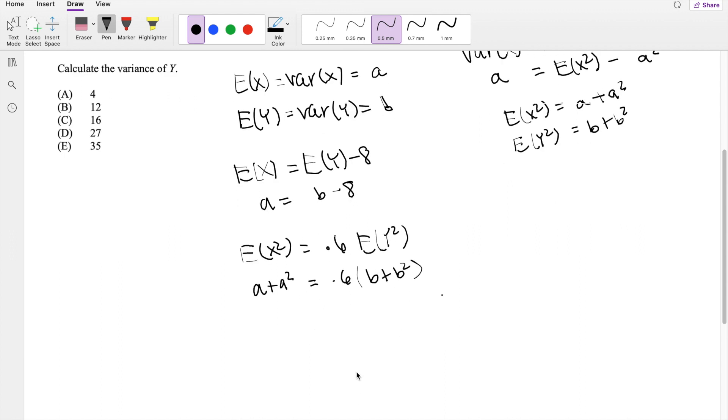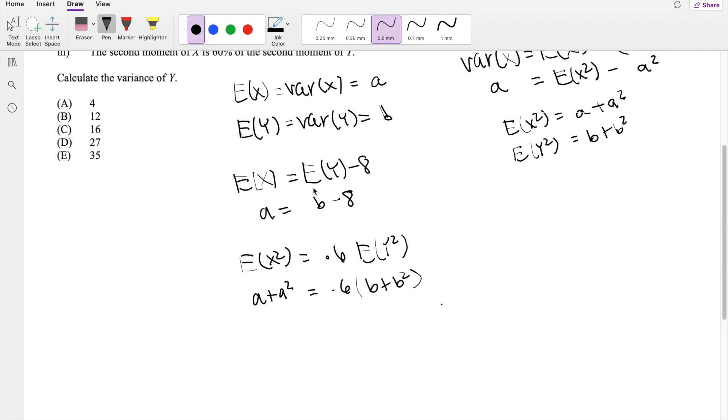So we can actually substitute some variables in. We know that a is equal to b minus 8, so we can put that in there. b minus 8 plus b minus 8 squared is equal to 0.6b plus 0.6b squared.